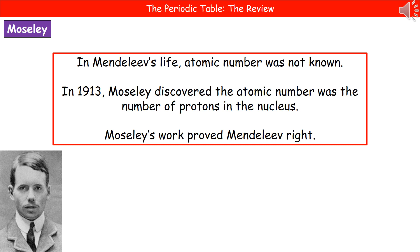If we jump forward to 1913, we come to Moseley. He actually discovered that atomic number was the number of protons in the nucleus. When he worked out the atomic numbers of those elements, he discovered that Mendeleev had been exactly right. Because when we look at the atomic numbers of iodine and tellurium, it puts them the way around that Mendeleev had predicted.